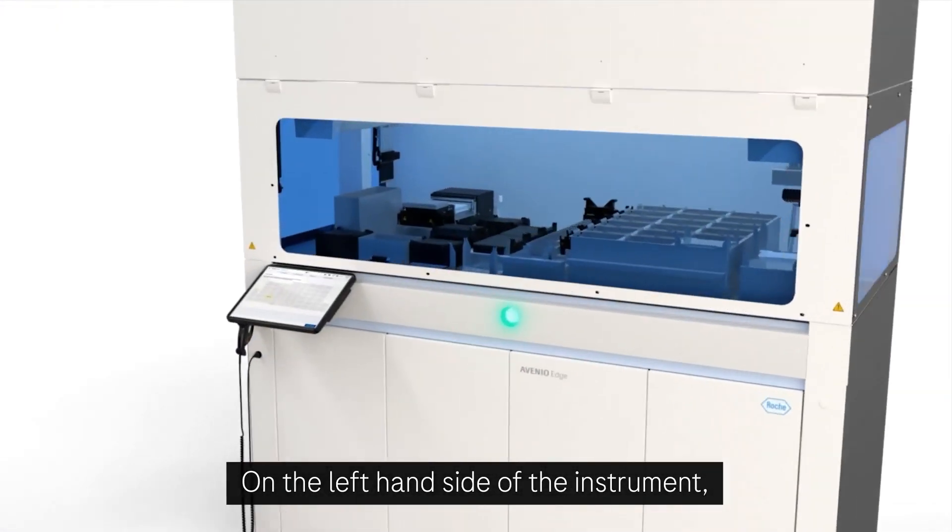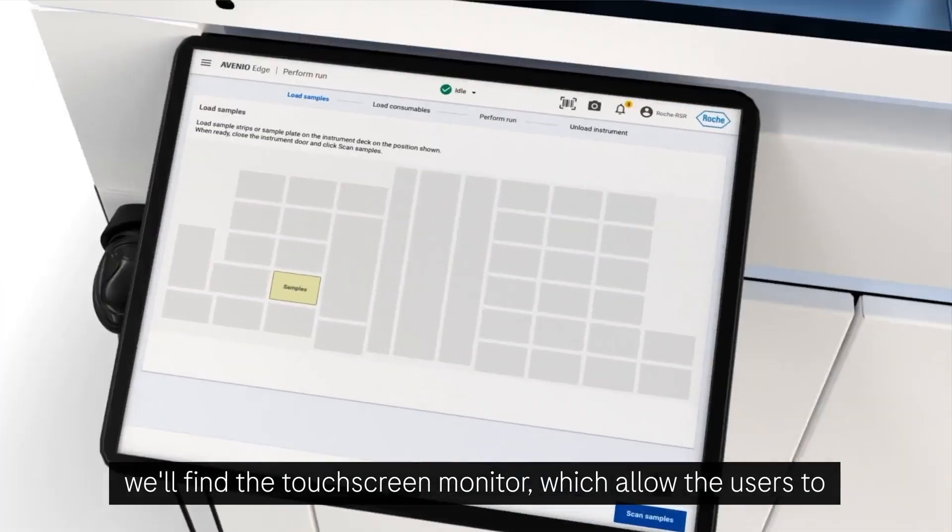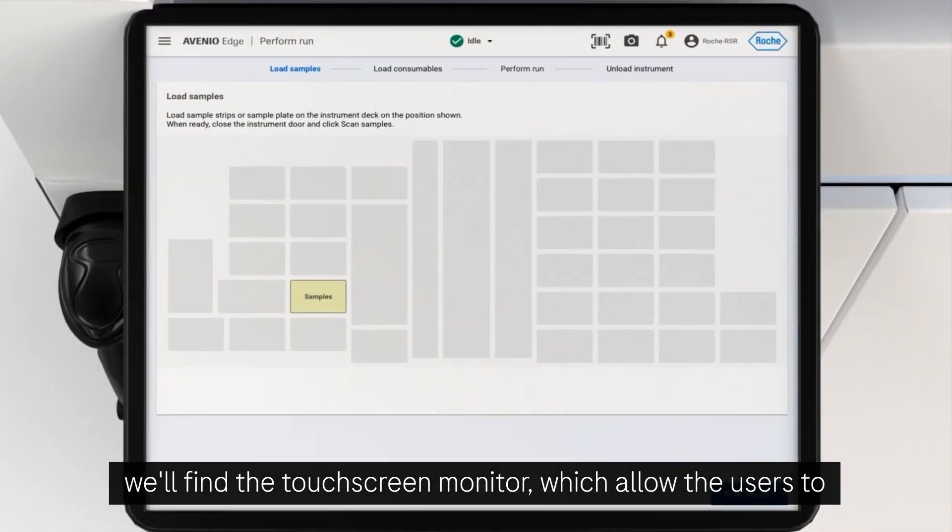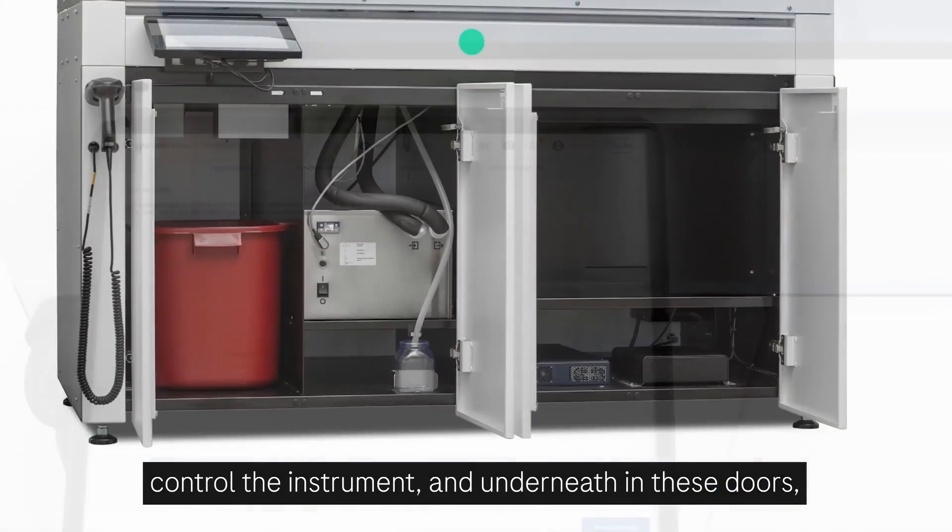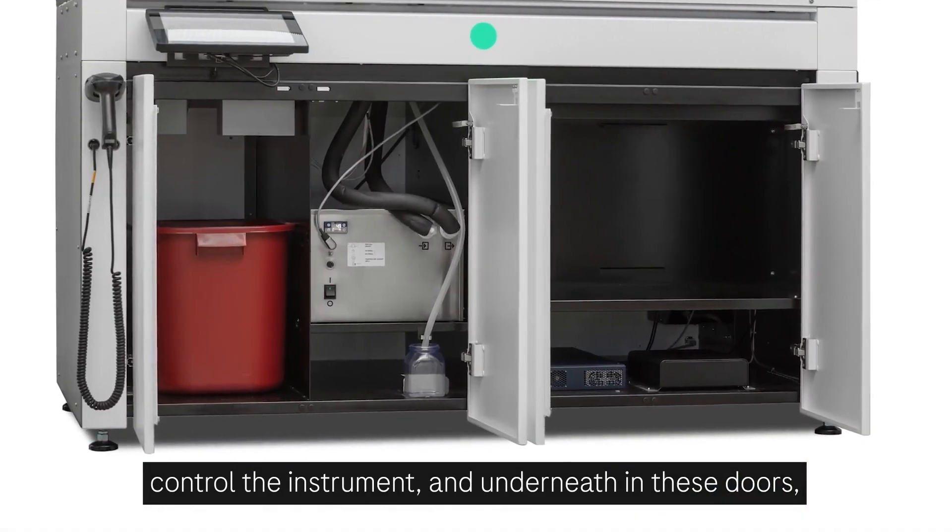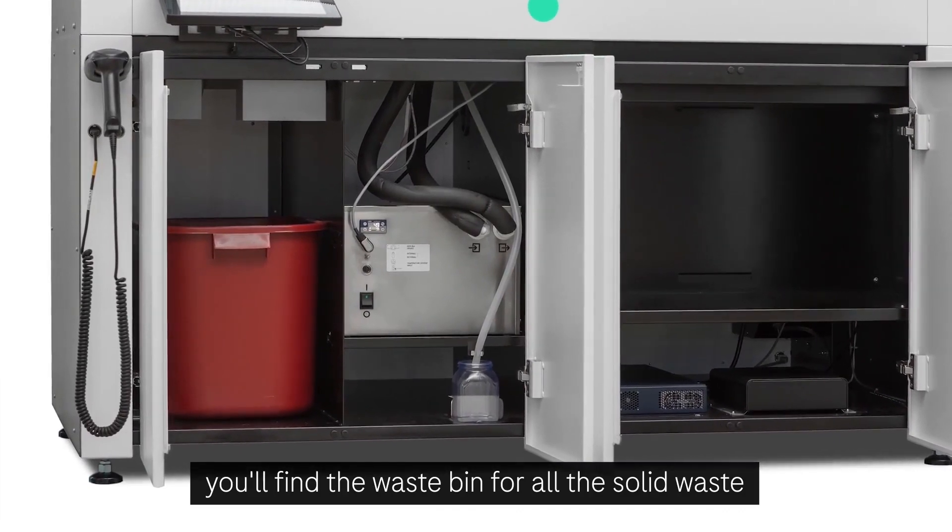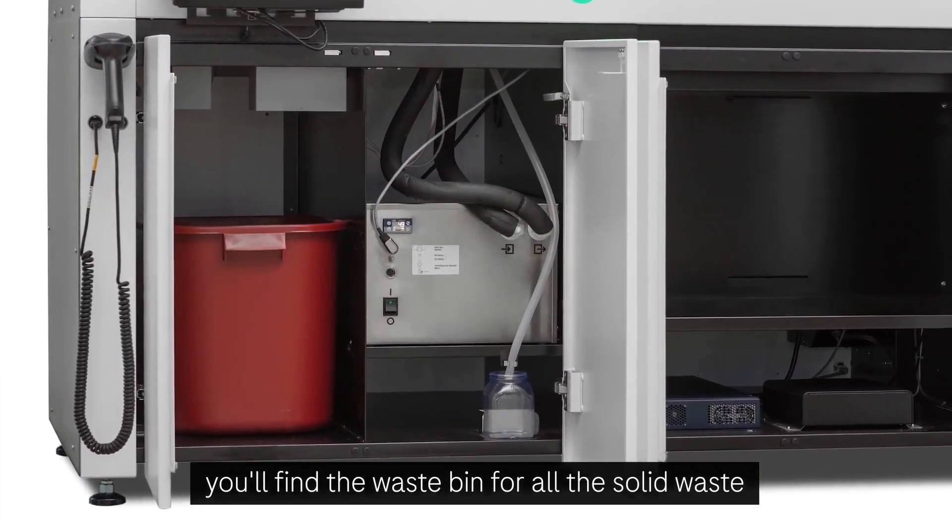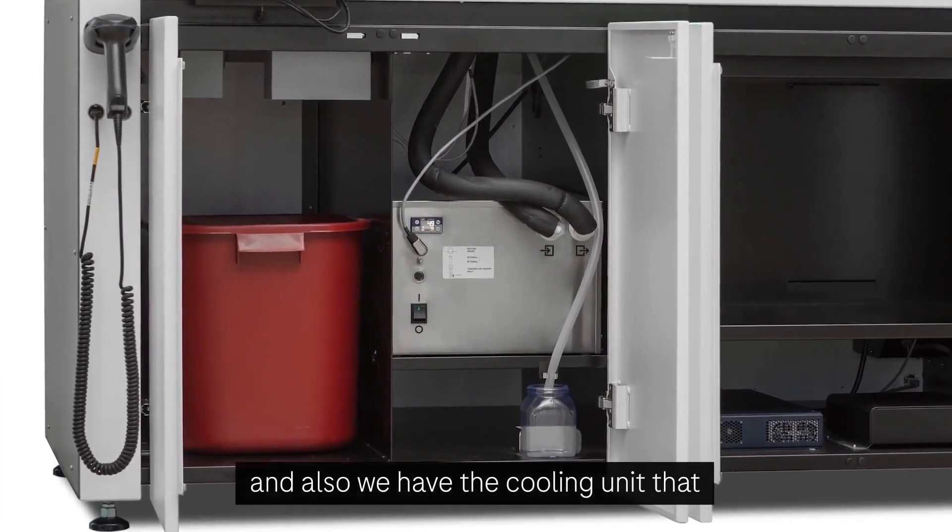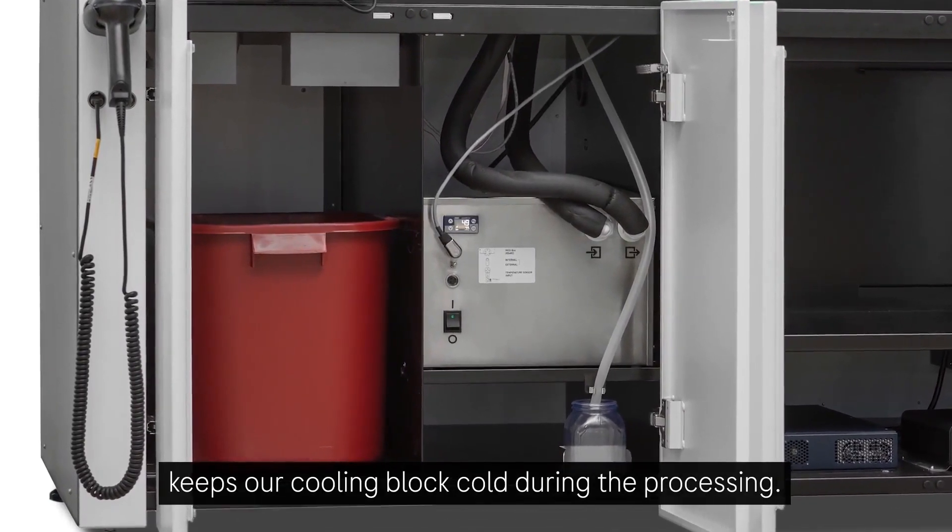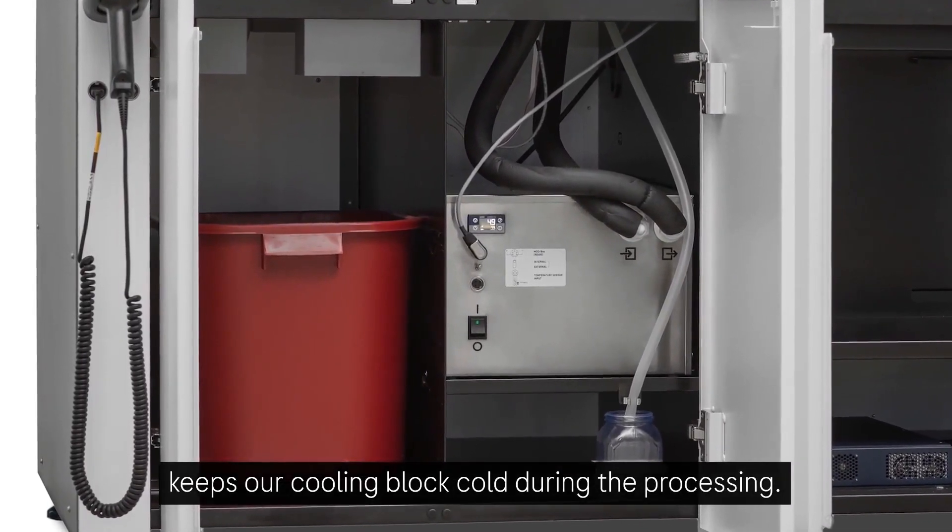On the left-hand side of the instrument, we'll find the touchscreen monitor, which allows the users to control the instrument. And underneath, in these doors which are locked during the processing, you'll find the waste bin for all the solid waste. And also, we have the cooling unit that keeps our cooling block cold during the processing.